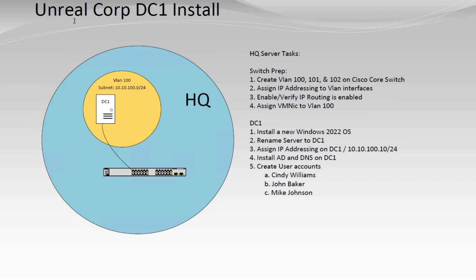So today is just part one — we're actually just going to get the DC1 install going and create some VLANs on the Cisco switch for Unreal Corp. I'll be creating basic user accounts for Cindy Williams, John Baker, and Mike Johnson. I'm also going to go over a little bit more on VMware — how I virtualize this in the VMware workstation environment and how it connects. I'm connecting these to virtual NICs; I have three NICs active in this lab, and eventually there'll be four or five connecting into some physical equipment and physical switching on the rack to create our VLANs and separate our traffic.